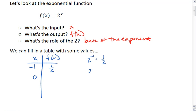If x is 0, that's 2 to the 0, which is 1, so f of x is 1. If x is 1, we get 2. If x is 2, we get 4. If x is 3, we get 8.